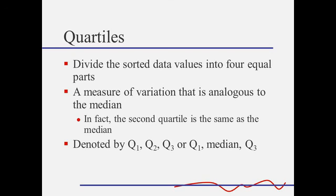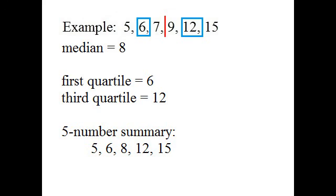We'll have three numbers that divide the data into four parts. Let's look at an example. We've seen these numbers before. You may remember that the median is 8 when we cut the data exactly in half. So then I cut that first half in half again. I find the first quartile is 6. And I take the second half and cut it in half, and find the third quartile is 12.